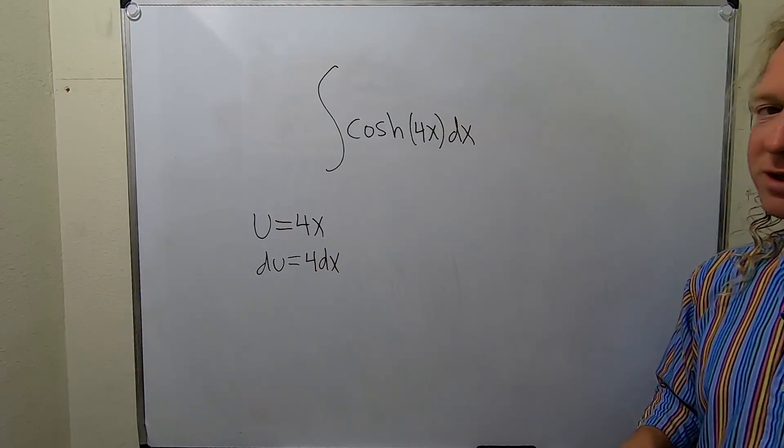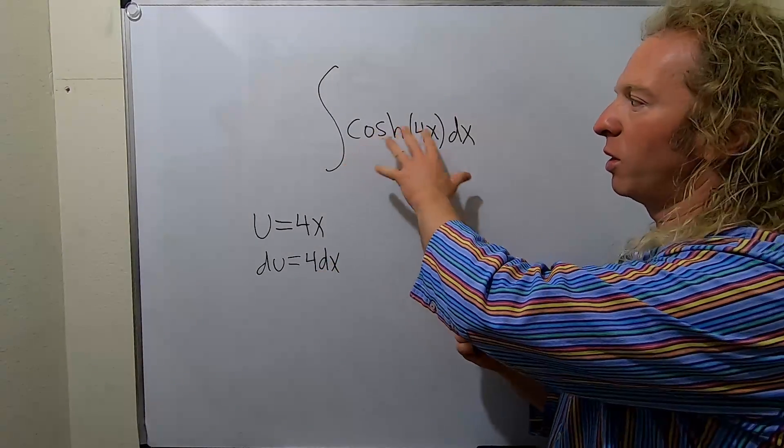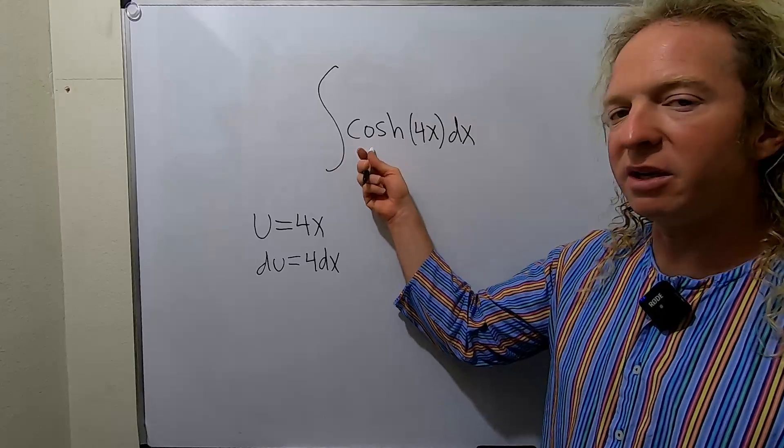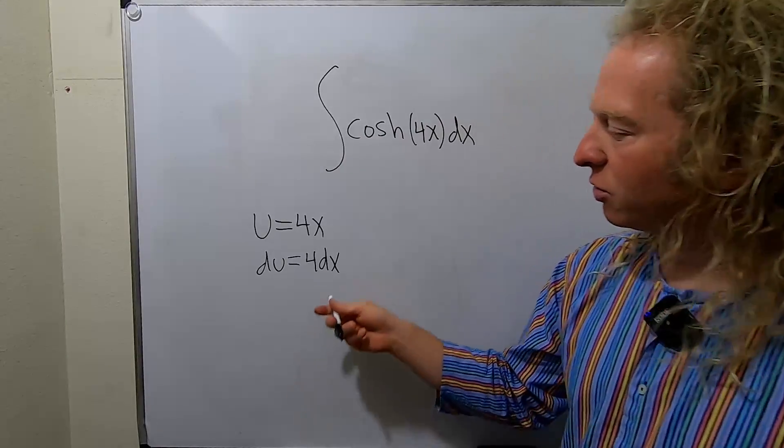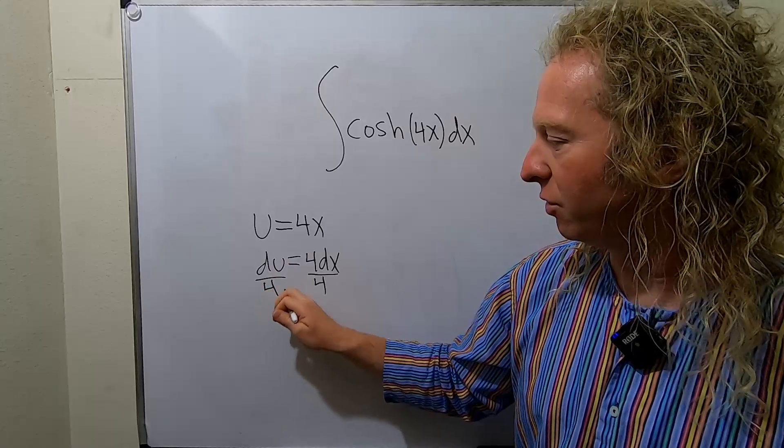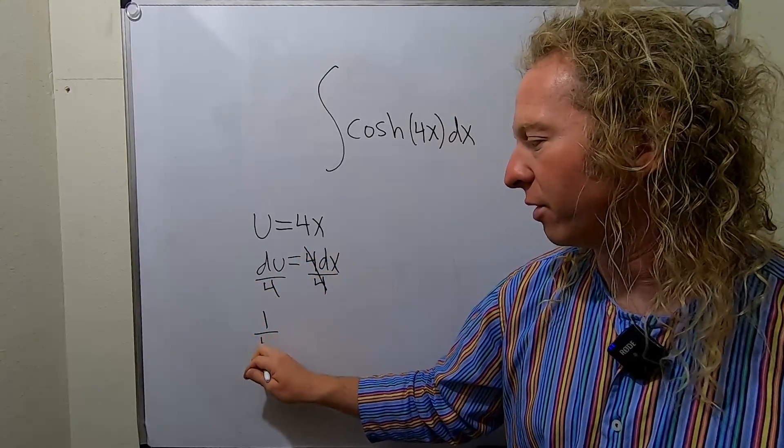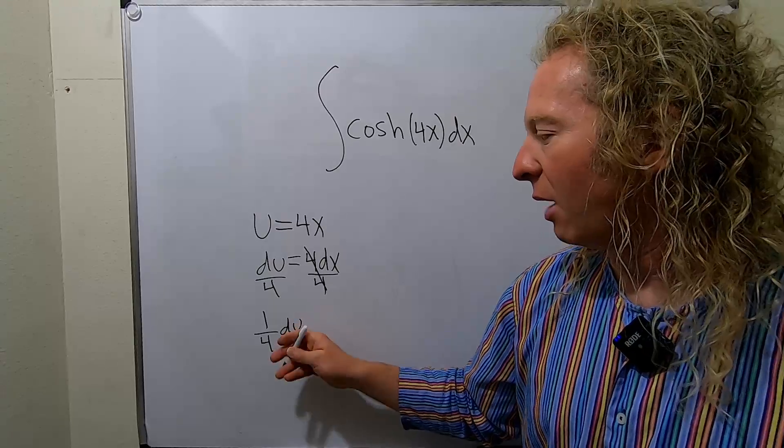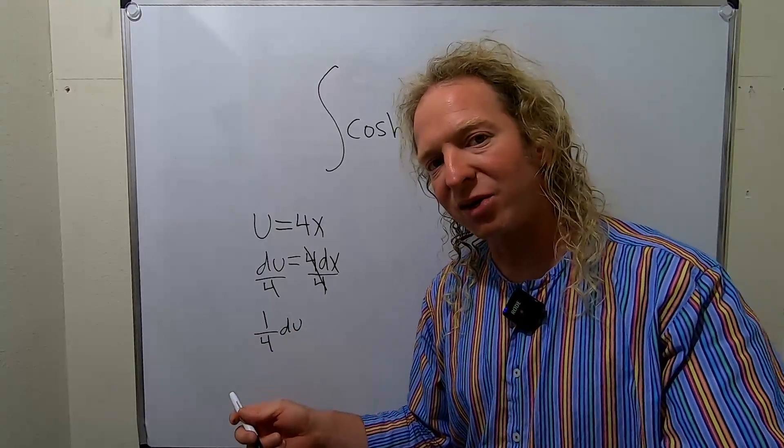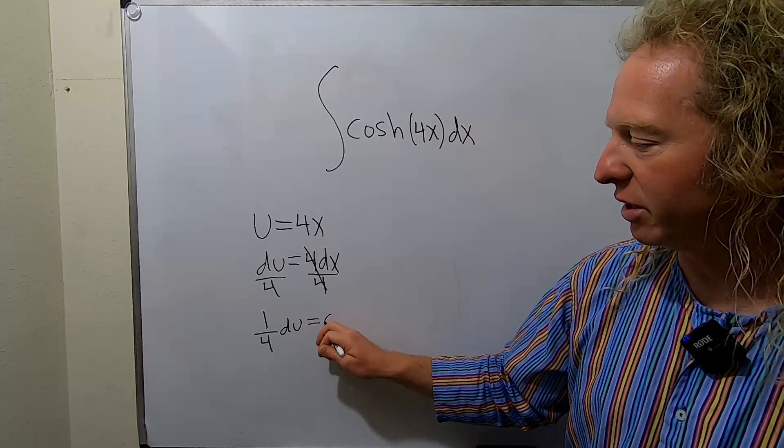As with any u substitution, once you get to this step, the goal is to make this look like what's up here. So you'll notice up here there is no 4. So what you do is divide both sides of this by 4 to get rid of it. So now we can write this as 1/4 du. And we do this because in the next step, we're actually going to pull out the 1/4. So this is equal to dx.